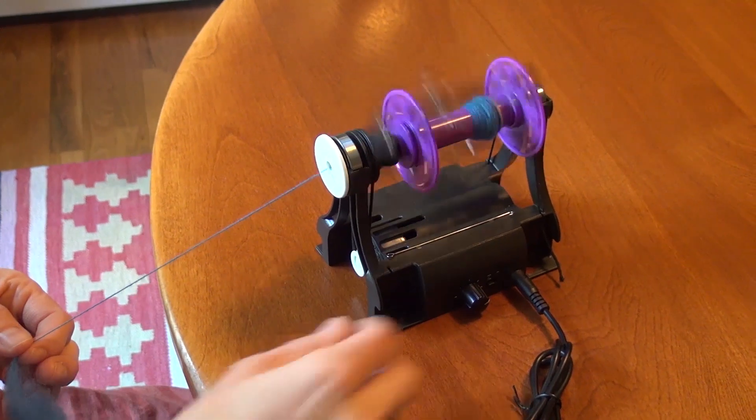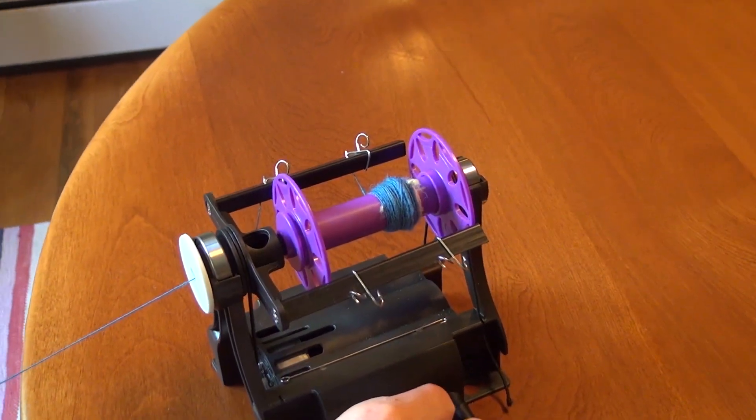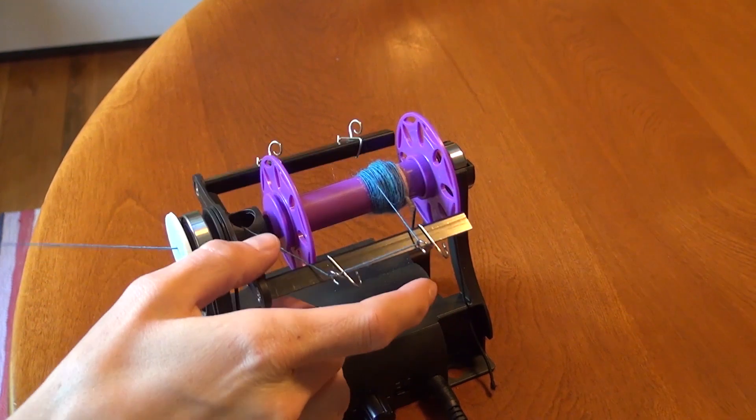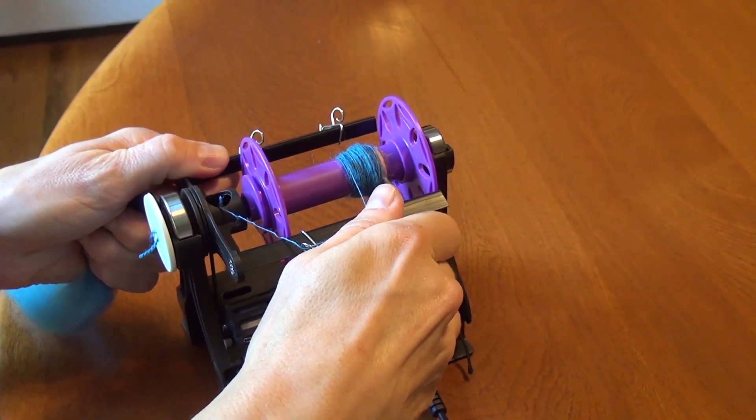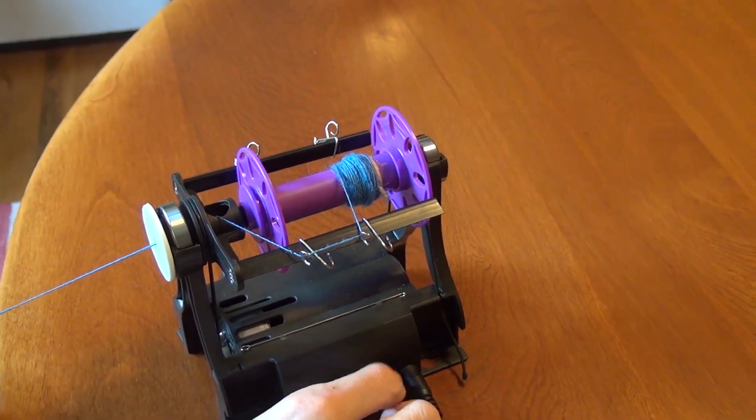After spinning for a while there will be a bump of singles on the bobbin. Now is the time to stop the Nano, slide the yarn hook like this, and then start spinning again.